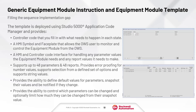The template is deployed using Studio 5000 Application Code Manager and provides controller code that you fill in with what needs to happen in each state, an HMI symbol and faceplate that allows the operator workstation user to monitor and control the equipment module, and an HMI and controller code interface for handling parameter values and report values. It supports up to 48 parameters and 48 reports, provides error-proofing for number values, supports selection of defined option sets and string values, allows defining default values, snapshot values, change notifications, and the ability to control which parameters can be changed and limit how much they can deviate from their snapshot value.